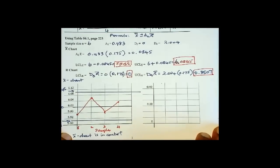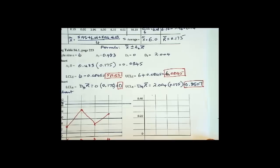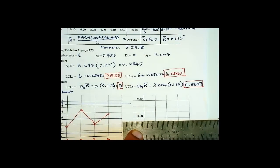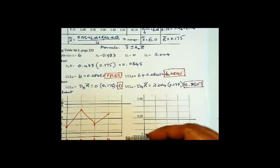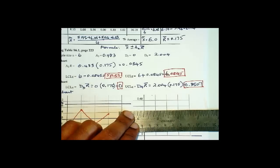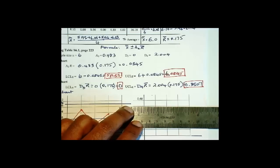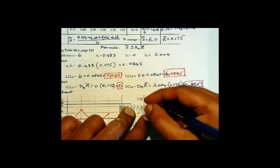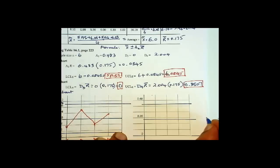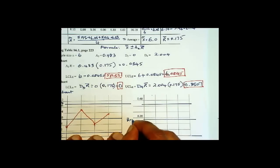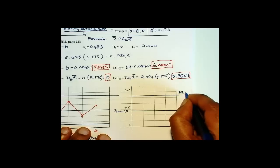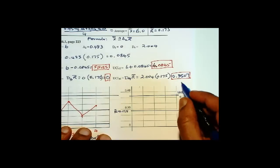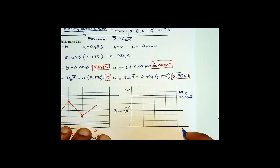Now let's draw the R chart. R-bar is 0.175, so 0.175 is about there. Then the lower control limit is 0, and the upper control limit is 0.3507. This is R-bar, 0.175. The upper control limit of R is 0.3507. Lower control limit for R is 0.